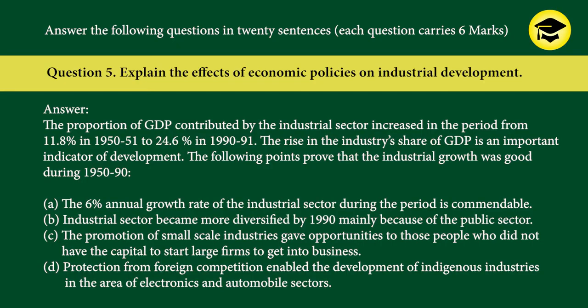The following points prove that industrial growth was good during 1950 to 1990: A) The six percent annual growth rate of the industrial sector during the period is commendable. B) The industrial sector became more diversified by 1990, mainly because of the public sector. C) The promotion of small-scale industries gave opportunities to people who did not have the capital to start large firms. D) Protection from foreign competition enabled the development of indigenous industries in the areas of electronics and automobile sectors.